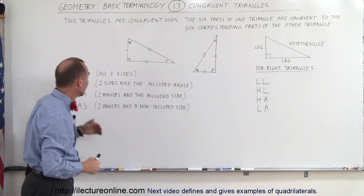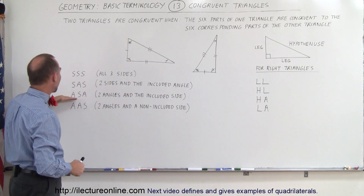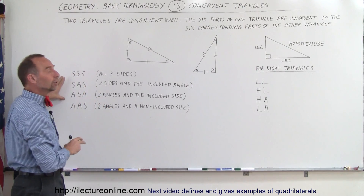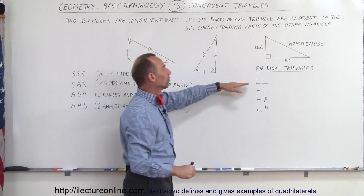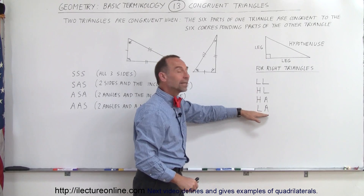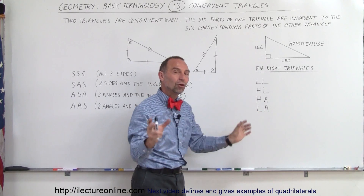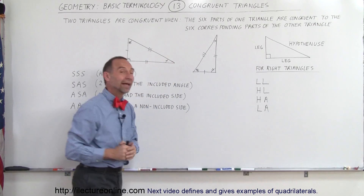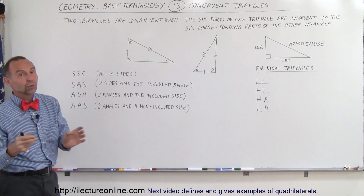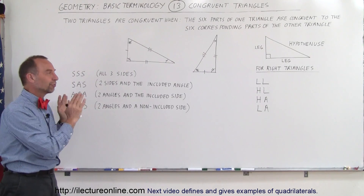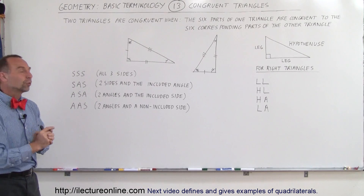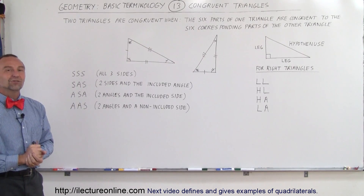So it is easy to remember: side-side-side, side-angle-side, angle-side-angle, or angle-angle-side for a non-right triangle. For right triangles: two legs, hypotenuse and a leg, hypotenuse and an angle, or one leg and one angle being congruent. Under those conditions you can show that both triangles are congruent. That is how we know triangles are congruent in geometry. Later on we will show you how to prove that, but for now it is sufficient to know these are the rules.